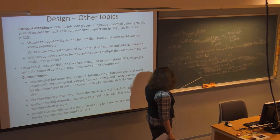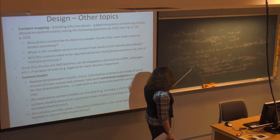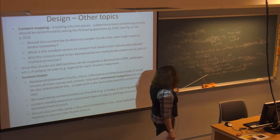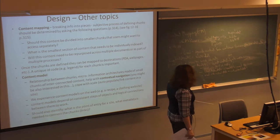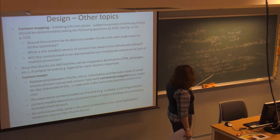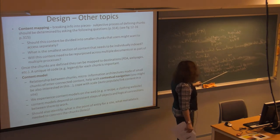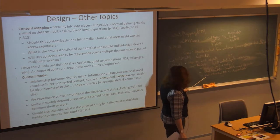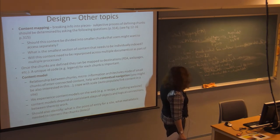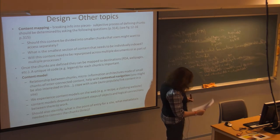The idea of the content model, covered on pages 317 to 323, is how you link objects together. You usually do a gap analysis to identify what content objects are missing from the site, what the point of entry is, what metadata is needed to connect the chunks of information together, and what is the critical data and critical metadata that's needed.